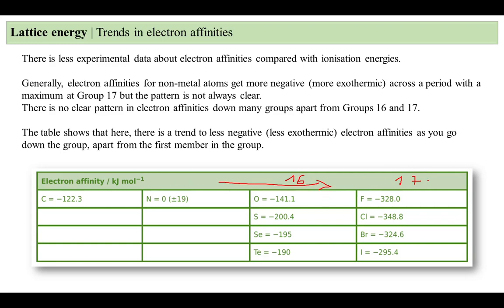Why does this trend occur? Going from left to right across a period, the number of protons increases, so the nuclear charge increases. The added electron will experience stronger attractive forces from the nucleus, making it easier to add an electron. This is why electron affinity values become more exothermic going across a period.